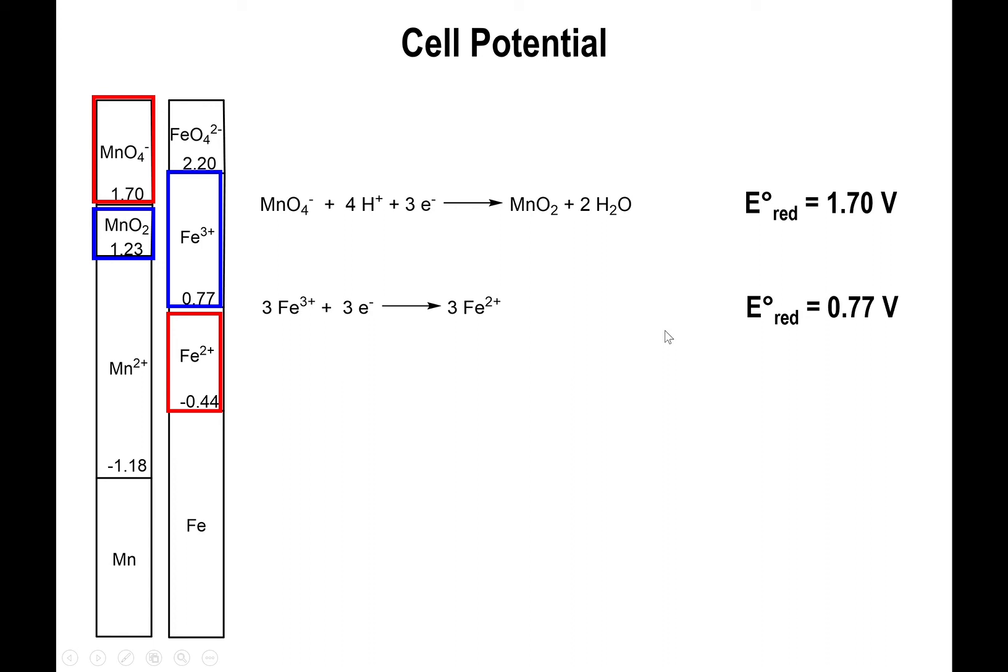But unlike what we did for delta H's and delta G's and the thermodynamic values, multiplying an equation does not affect the value of the potential. Because once again, the potential is the ratio of energy per charge. And as you do change the energy, you also proportionally change the charge. So the ratio ends up being always the same no matter how much amount of material you have or how little amount of material you have. So the value of the reduction potential will remain 0.77.